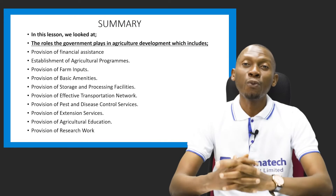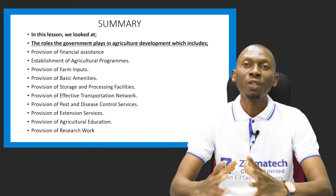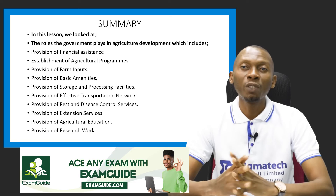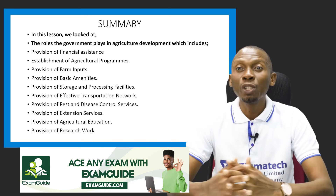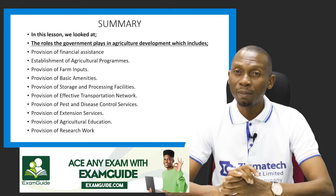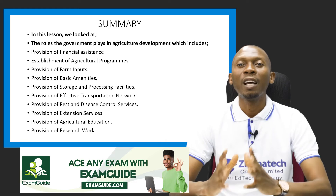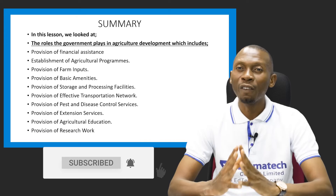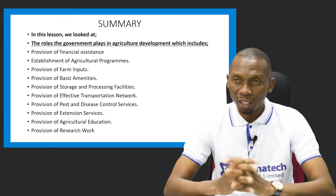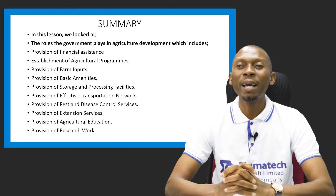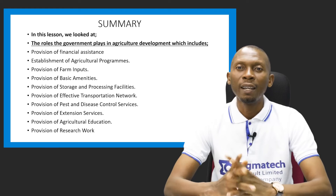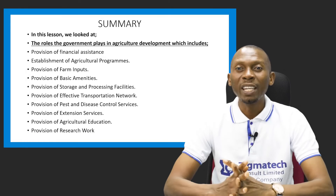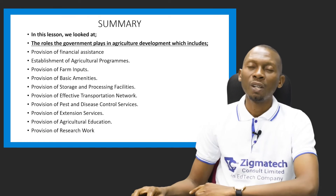Let's have a recap on what we've learned so far. The roles the government has played in agricultural development include the provision of financial assistance, establishment of agricultural programs, provision of farm inputs, provision of basic amenities, provision of storage and processing facilities, provision of an effective transportation network, provision of pest and disease control services, provision of extension services, agricultural education, and finally the provision of research work.